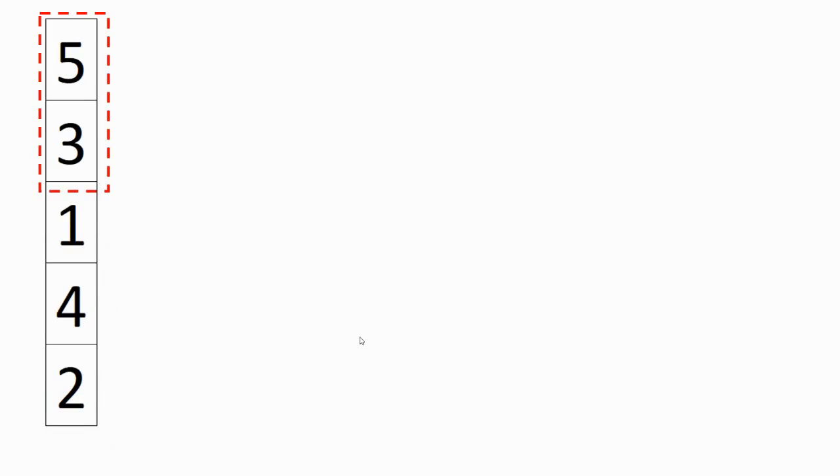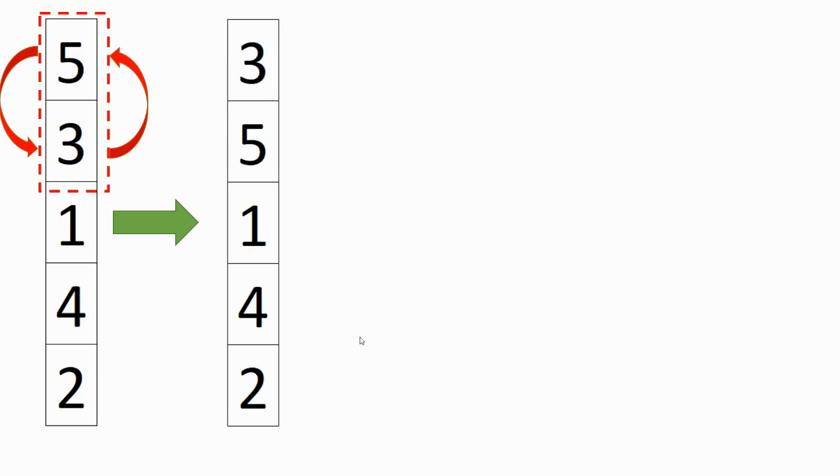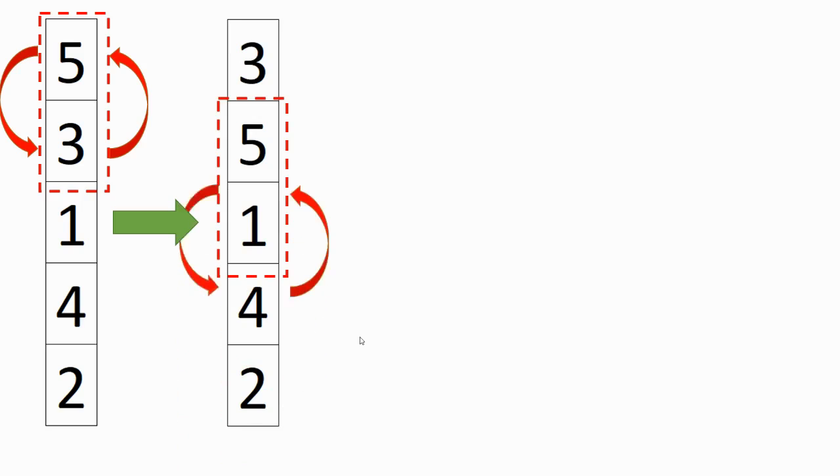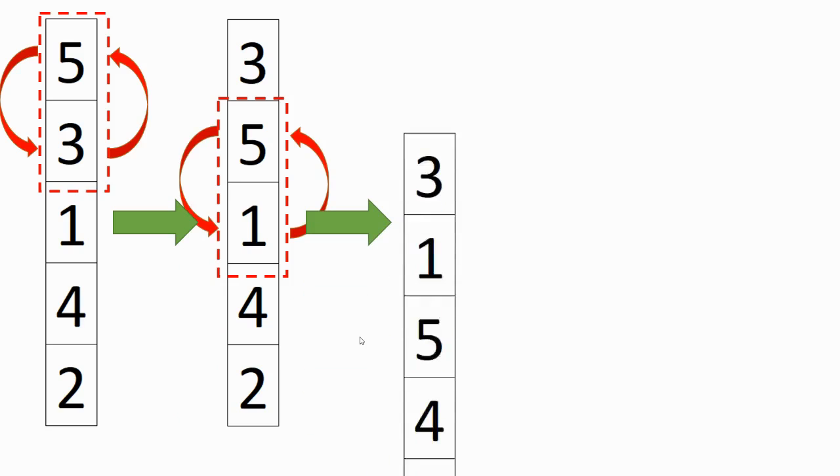So what will we do? We will basically compare the first item with the second item. And if the first item is larger than the second item, we will swap them. And then we will compare the second item with the next item. And if the first item is greater, we will swap it. And so on.